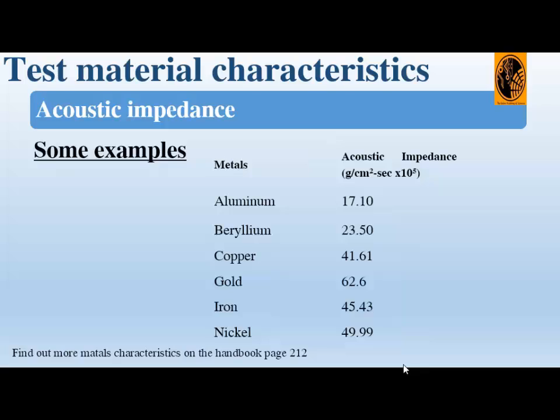Here is an example of acoustic impedance of different materials. For aluminum, it's 17.10 Rayls. For gold, it's 62.6 Rayls. And for nickel, it's 49.99 Rayls. You can find more of those characteristics in the handbook on page 212.